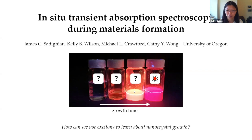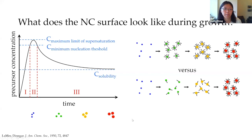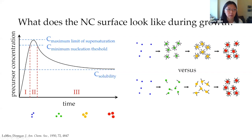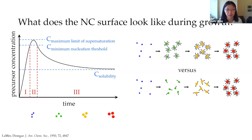What I wanted to do is see if we can use excitons to learn something about how nanocrystals actually grow. The main mechanism of growth people typically cite is from LaMer back in the 1950s — a burst nucleation mechanism. The idea is that precursor concentration increases until it reaches a minimum nucleation threshold; beyond that, you start to form nuclei. Forming nuclei depletes the precursor concentration, you drop below the threshold, and nucleation is over. Then each nucleus continues to grow.